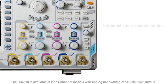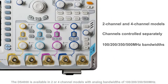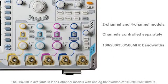The DS4000 is available in 2- or 4-channel models with analog bandwidths of 100, 200, 350, and 500 MHz.